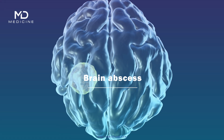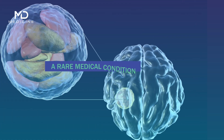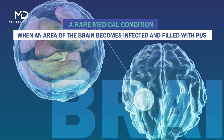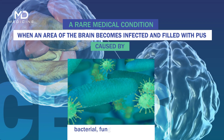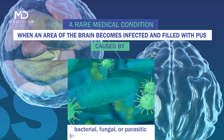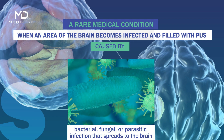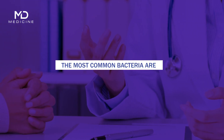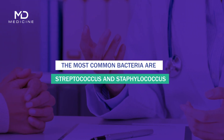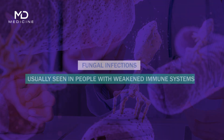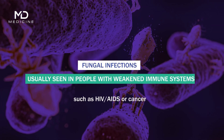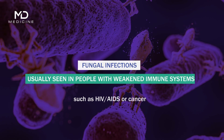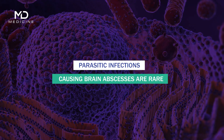Brain abscess is a rare medical condition when an area of the brain becomes infected and filled with pus, caused by a bacterial, fungal, or parasitic infection that spreads to the brain. The most common bacteria are Streptococcus and Staphylococcus. Fungal infections are usually seen in people with weakened immune systems, such as HIV, AIDS, or cancer. Parasitic infections causing brain abscesses are rare.